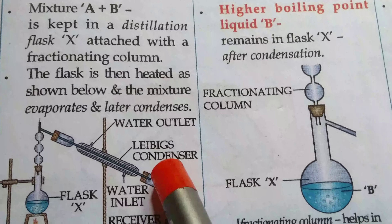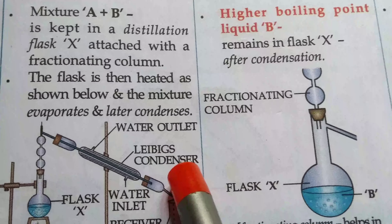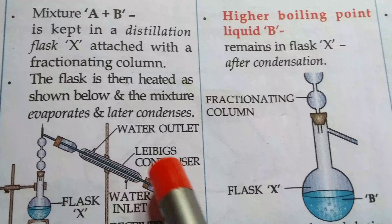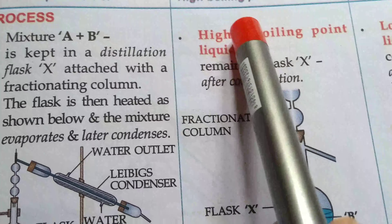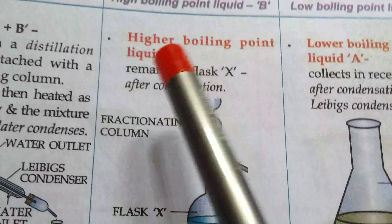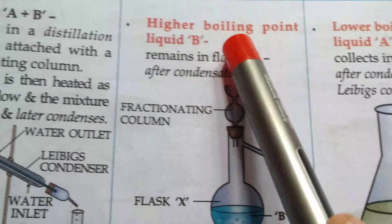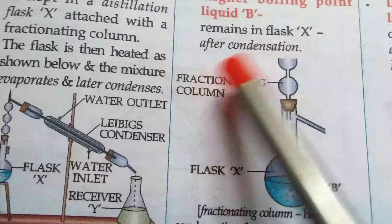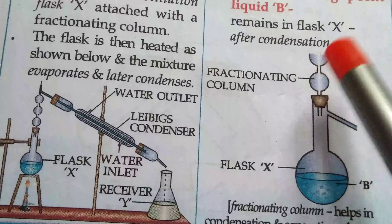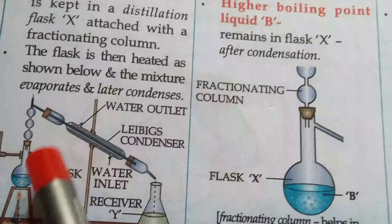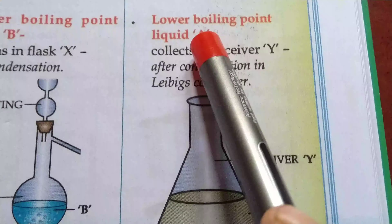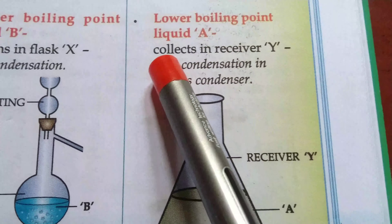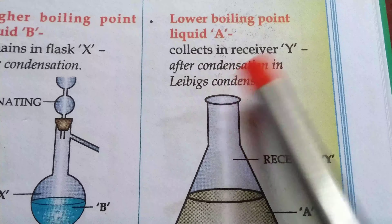As per your question it will be MCQ type, so this part is more important. Liebig's condenser is used in the fractional distillation process. The higher boiling point liquid B remains in the flask X after condensation. The lower boiling point liquid A is collected in the receiver Y after condensation in the Liebig condenser.